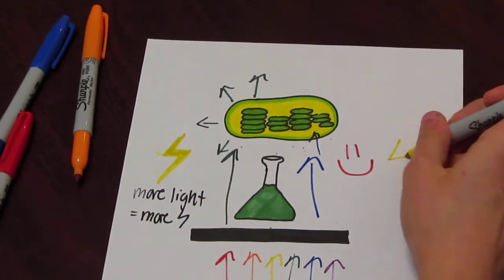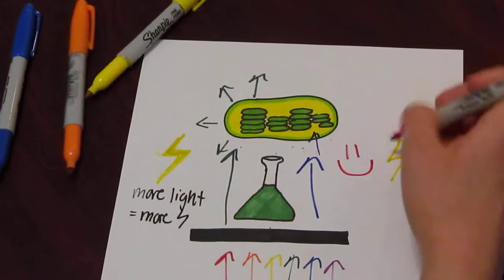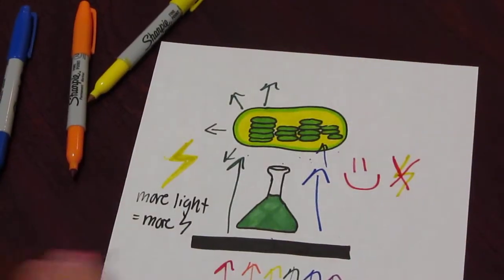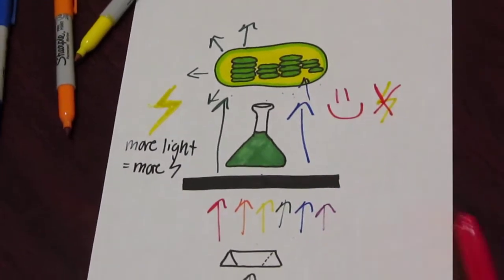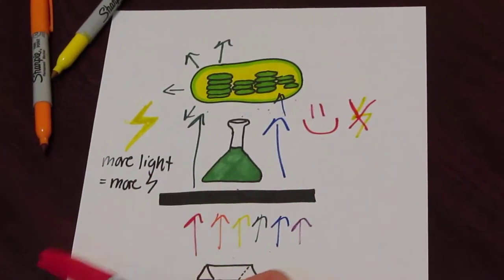That's bad. So this experiment shows what wavelengths of light the chloroplasts are going to absorb or reflect, and it's going to be measured by how much electricity is produced.